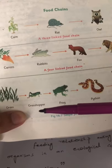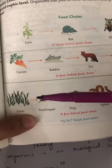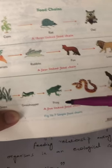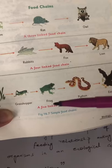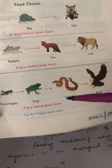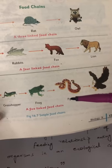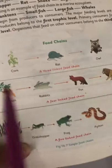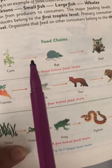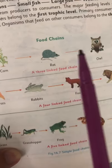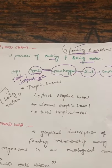We have another example of a food chain. There is the grass, then the grasshopper which consumes the grass. The frog consumes the grasshopper. The python eats the frog while the eagle eats the python. The python is a type of snake. So that is basically a food chain.